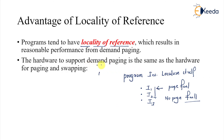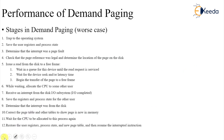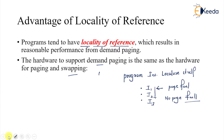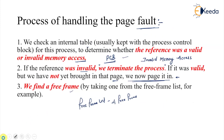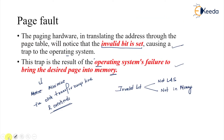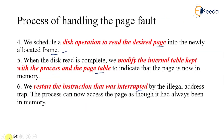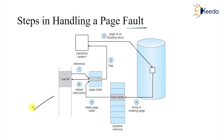Hardware support remains the same — the valid/invalid bit required for paging is still used. So in this discussion we covered page fault, demand paging, and pure demand paging. The invalid bit is central to the whole mechanism, and the diagram covers all the steps. I hope you understand this entire discussion — the idea behind it is simple and elegant. That's all for this discussion, thank you.